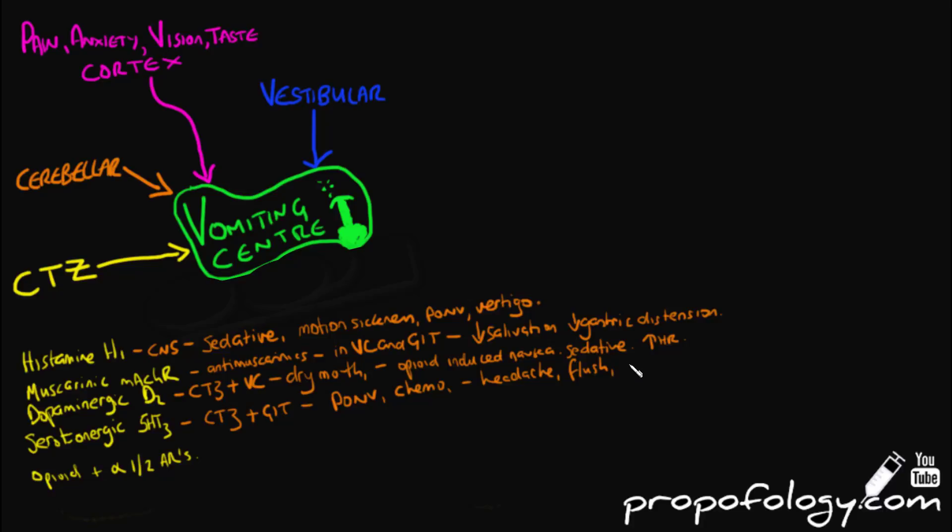When stimulated, opioid receptors and alpha-1 and alpha-2 adrenoreceptors in the chemoreceptor trigger zone can cause vomiting. This is why we tend to avoid these drugs if we are trying to avoid nausea and vomiting. Examples of opiates are obviously morphine and fentanyl. Examples of alpha-1 and alpha-2 adrenoreceptor agonists are things like adrenaline, noradrenaline, phenylephrine and metaraminol.